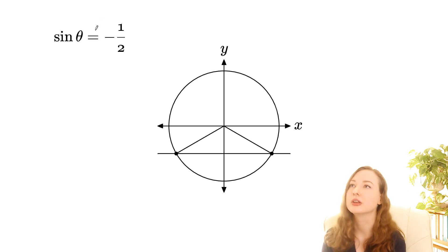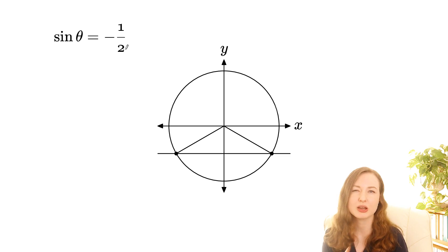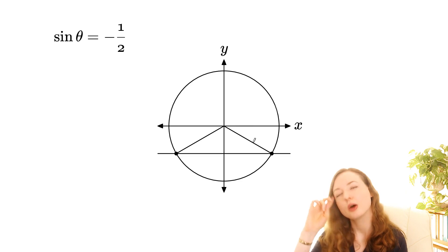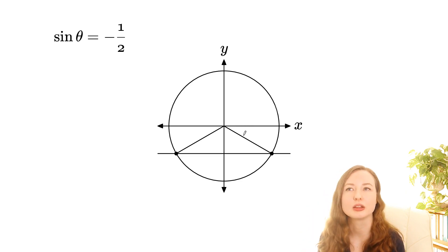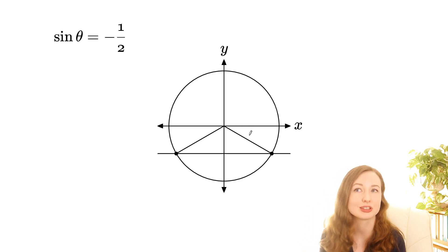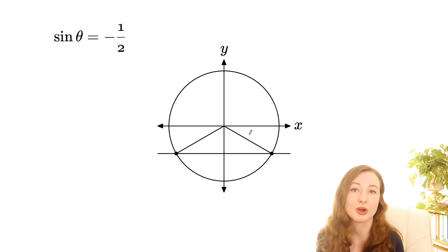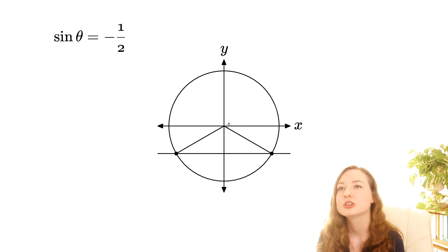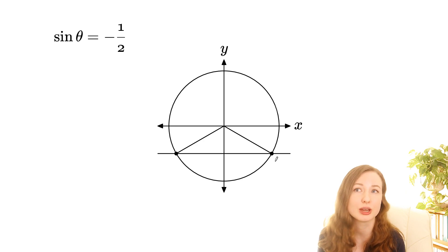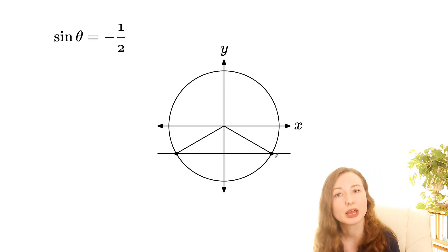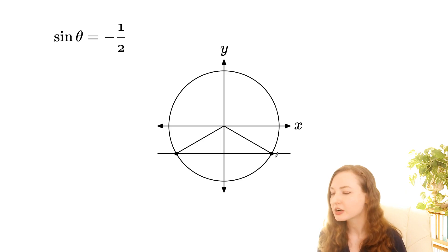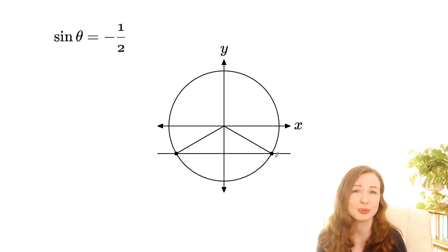Because we know that this is one of the special values I talked about in my last video, we know that this is going to be either 30, 45 or 60 degrees. So you can kind of just eyeball this — that looks like 30, it's quite small. So you can see that this angle is going to be like negative 30 degrees, or if we're working in radians it could be negative pi on 6. But there are actually a lot of different ways that you could describe that angle.